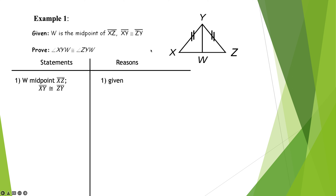Notice something: I don't know how to prove those angles congruent directly until I get the triangles congruent. That's the big step this is teaching — to look at this and say to yourselves, okay, now that I see I'm supposed to get these angles congruent, what can I do to get the triangles congruent? That will in turn give me the angles I'm looking for.